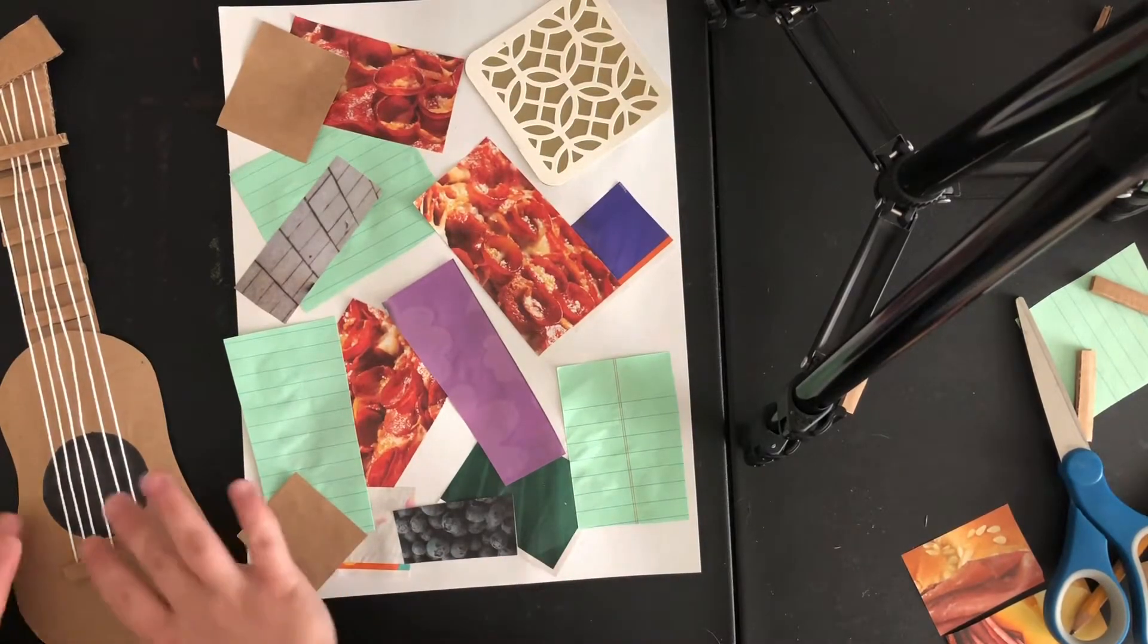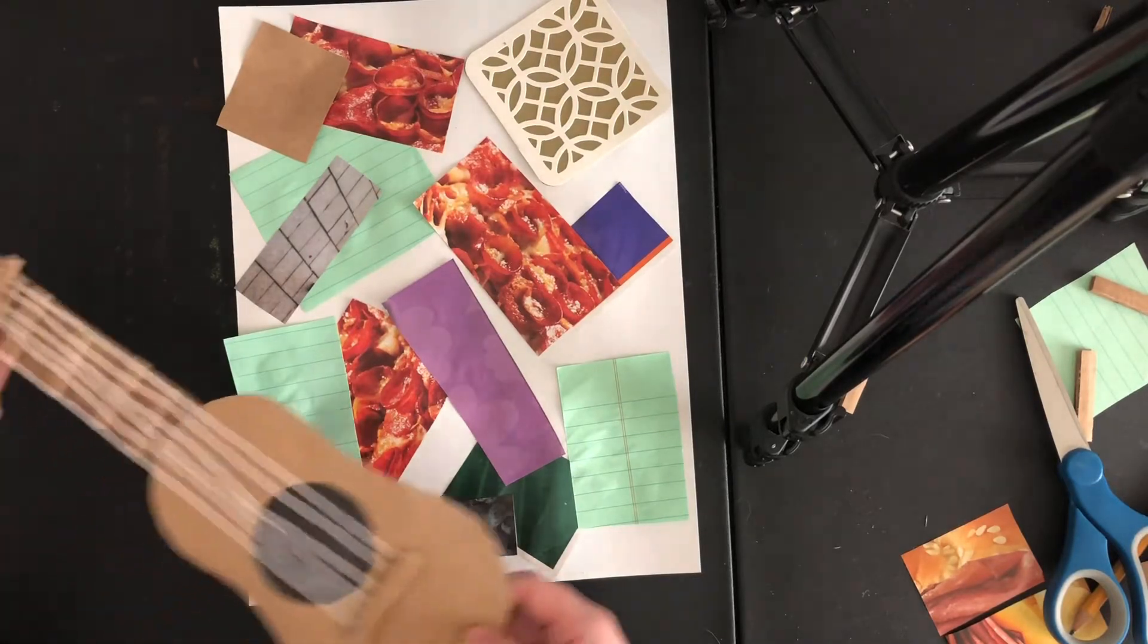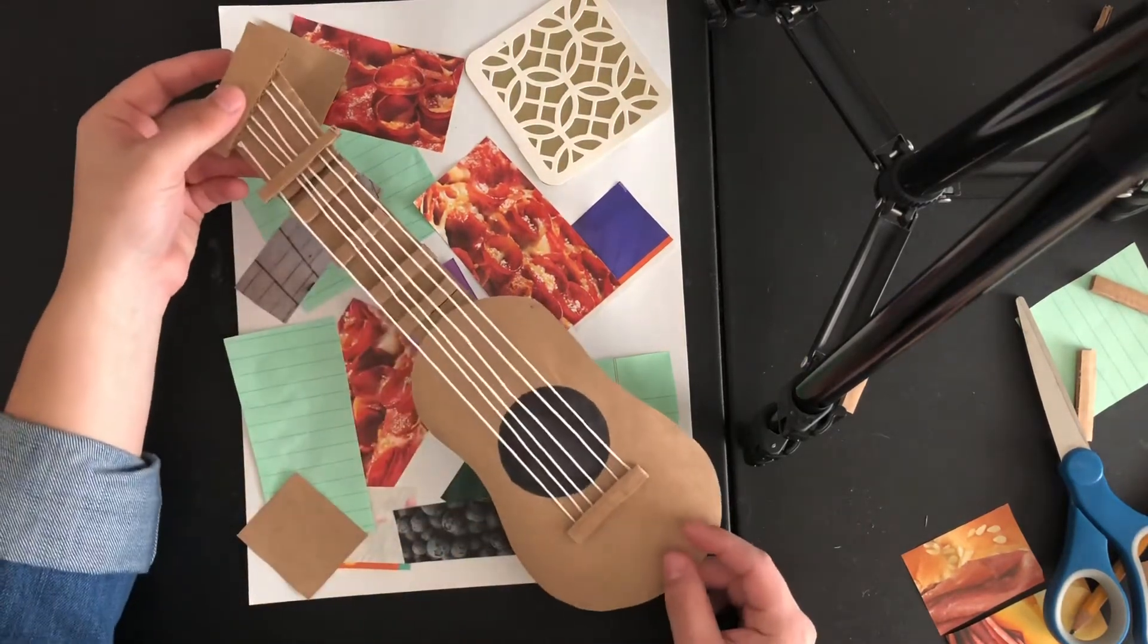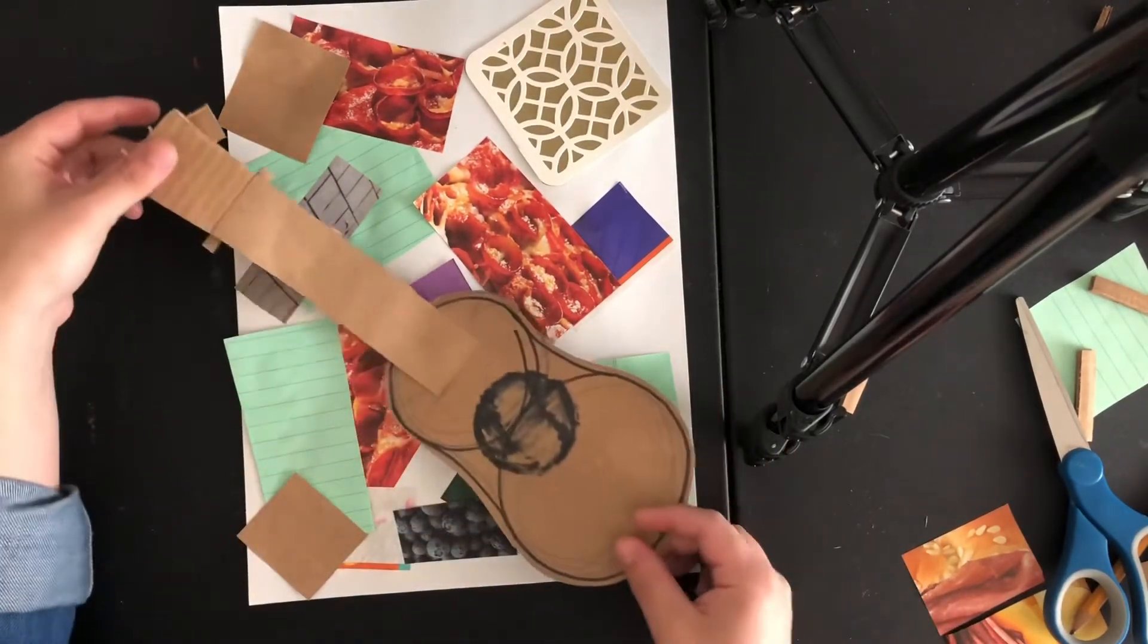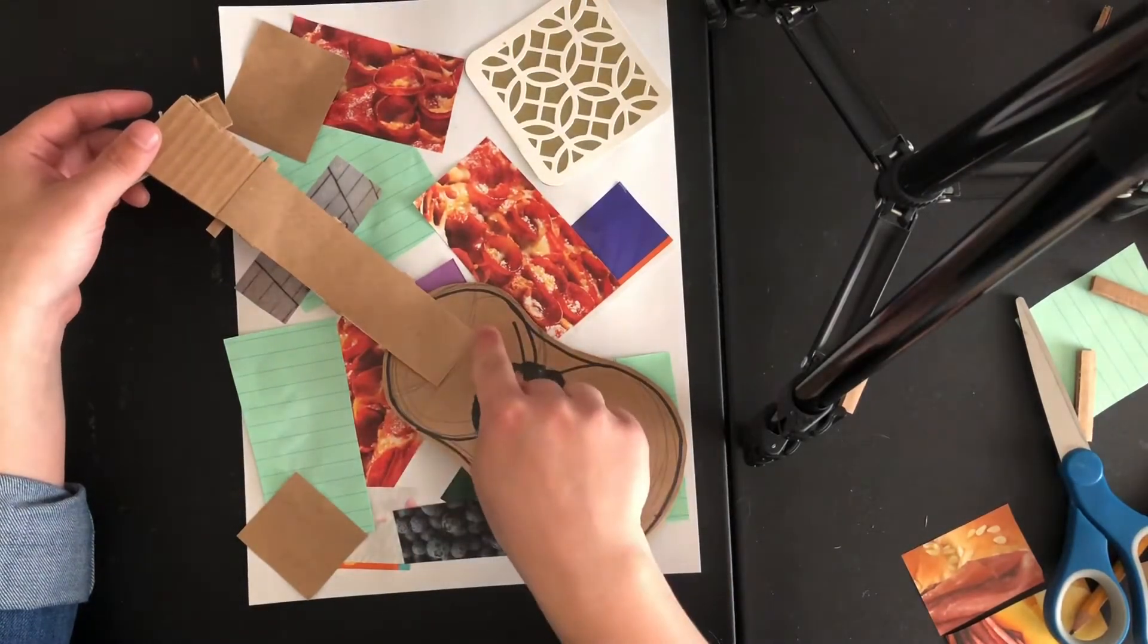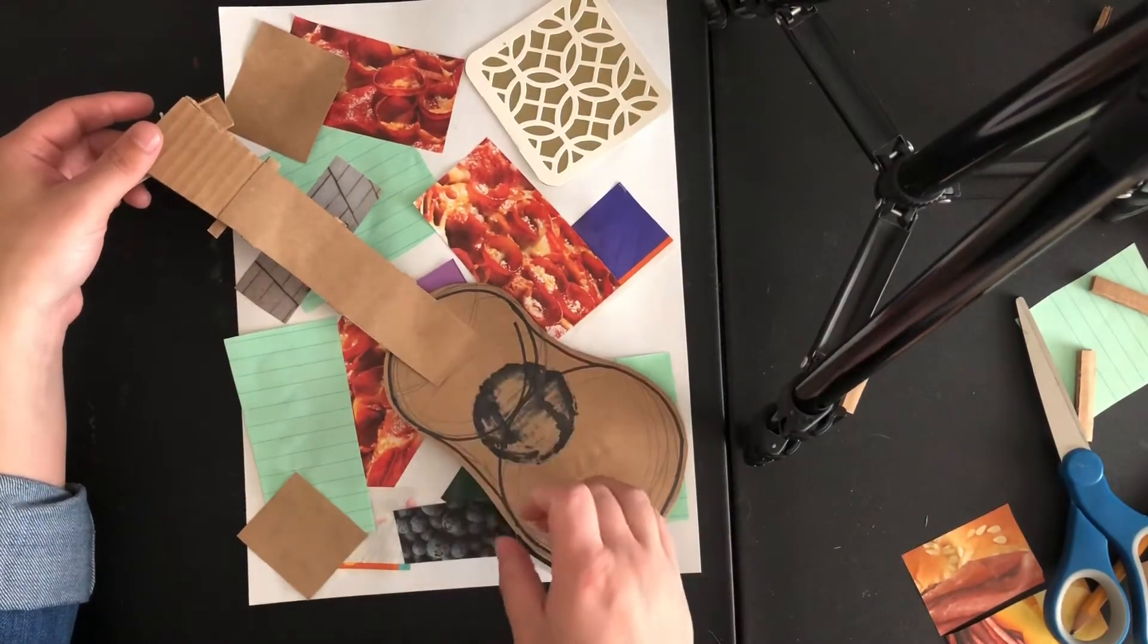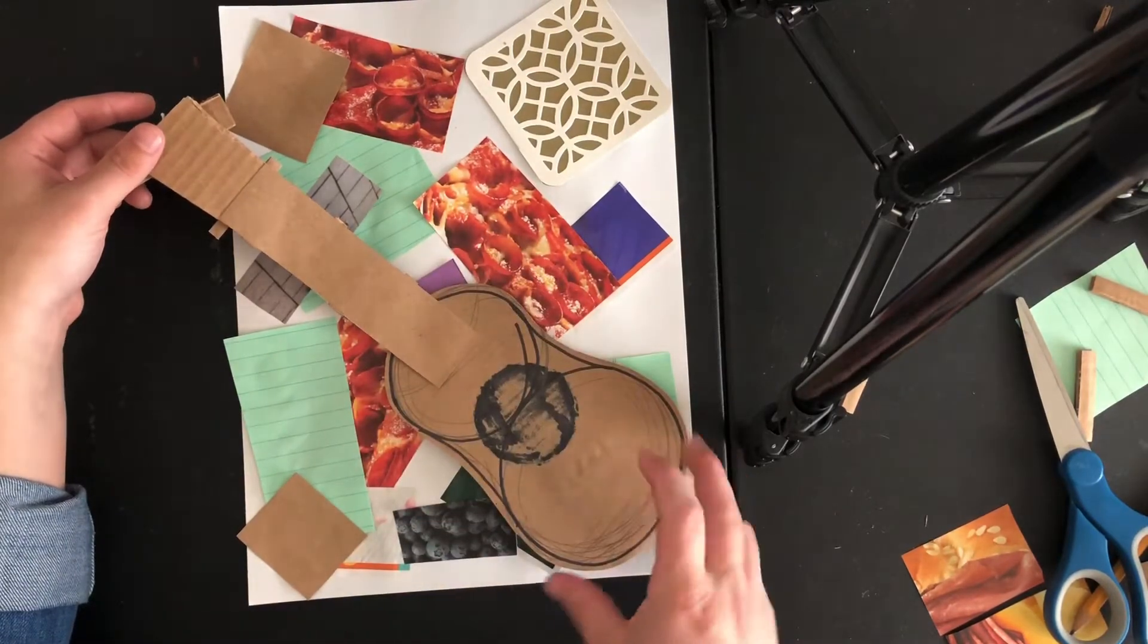So I've already constructed my guitar just to save some time. It does take a little bit of time to construct just because you want to let the glue dry, but I will show you how I assembled it. So to start, I drew two circles. One's a little smaller and then I connected those circles and I used that as a shape for my guitar body and cut that out.